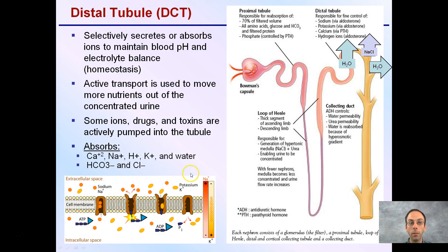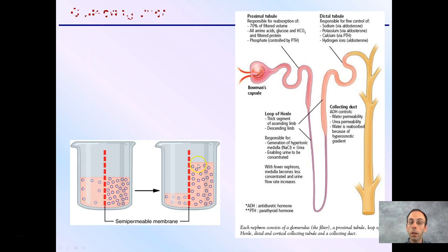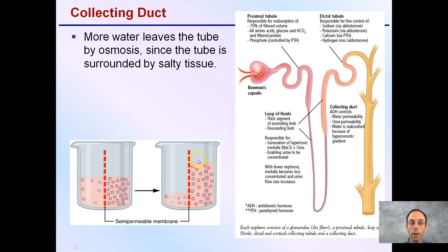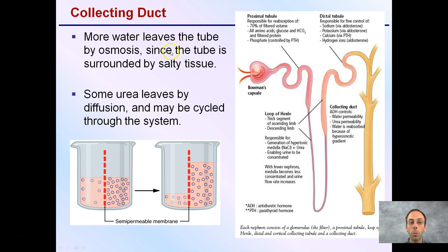This active transport requires ATP. Continuing on, in the collecting duct, more water leaves the tubule by osmosis since the tube is surrounded by salty tissue. That salty tissue drives the movement of water in that direction. Some urea also leaves by diffusion, but it may be cycled through the system. Remember, urea is less toxic than ammonia.